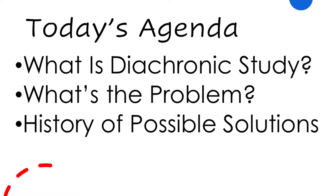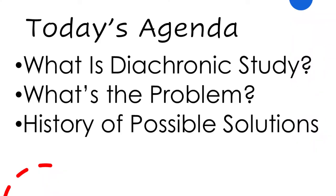First, we're going to look at what exactly diachronic study is — what it is that we're doing and why we're doing it. Then we're going to look at what the problem is: what question does diachronic study, that is historical critical analysis, attempt to solve? And then we're going to look at the history of possible solutions from the Middle Ages all the way to the beginning of the 20th century.